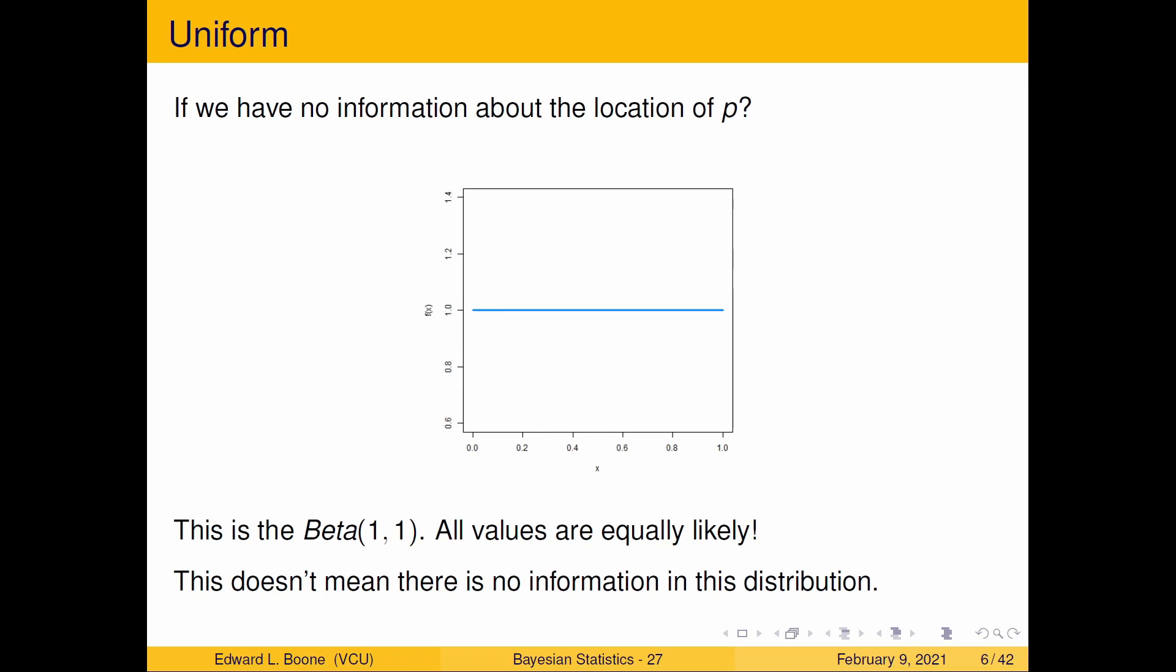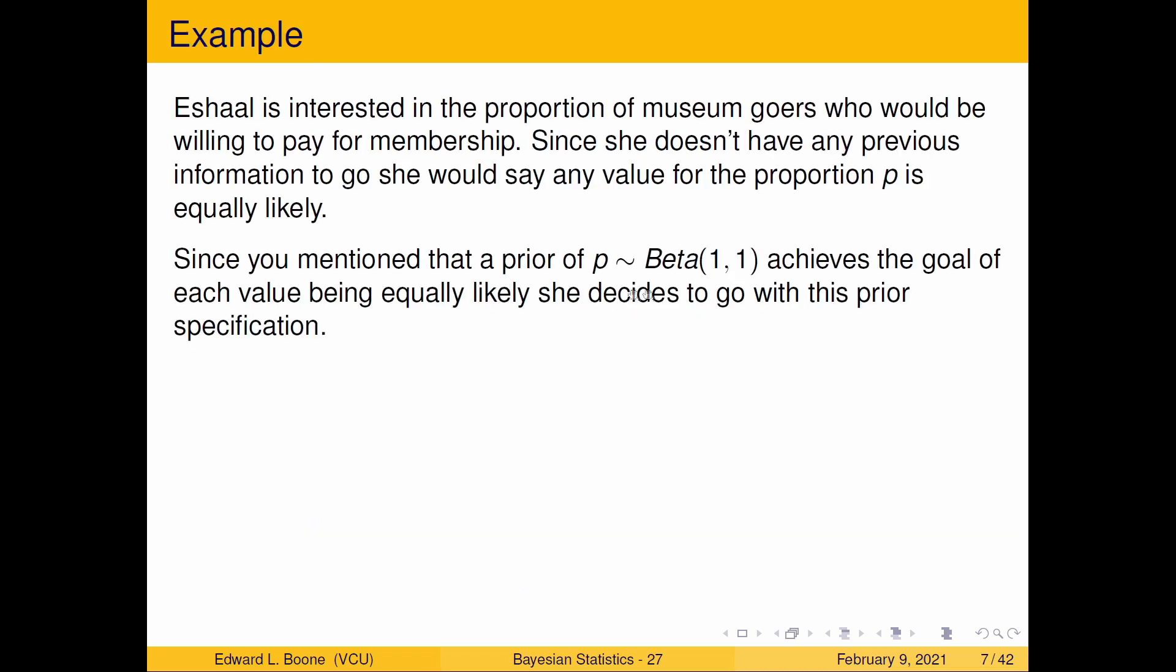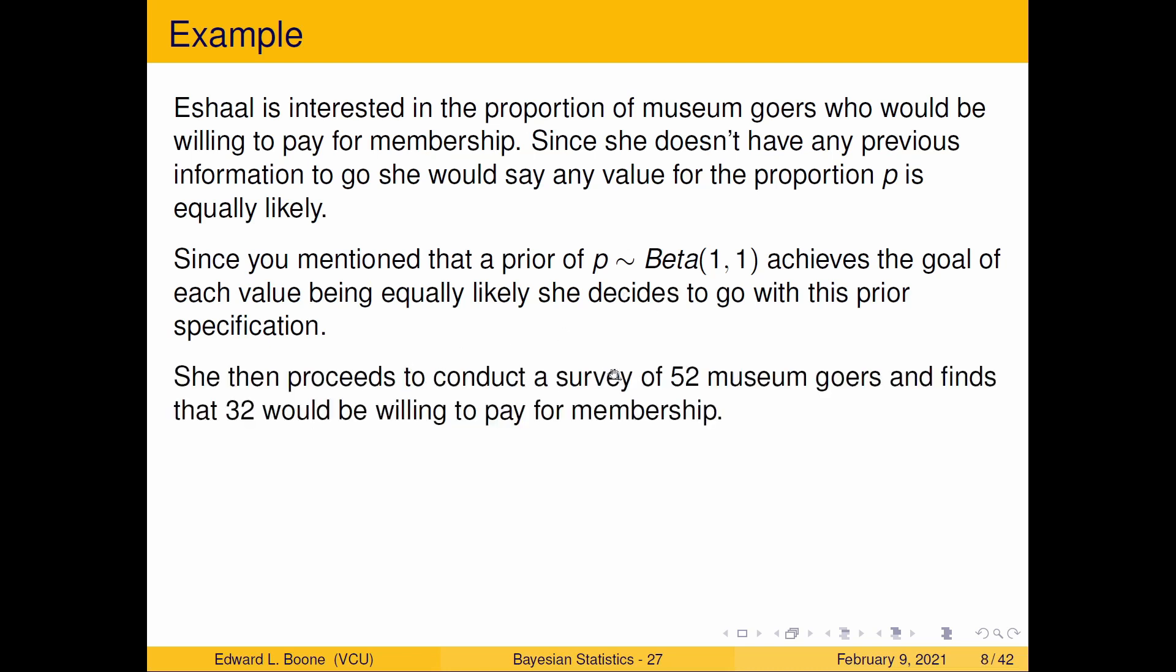Just keep in mind, this doesn't mean there's no information in this distribution. There is information. The fact that the proportion is going to be between 0 and 1, that is information. So if she uses this, and then she goes and collects some data, so if she collects a survey of 52 museum goers and finds that 32 would be willing to pay for membership, then we can use the formula that we had at the beginning for the posterior.